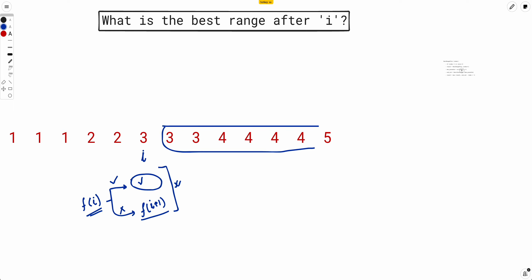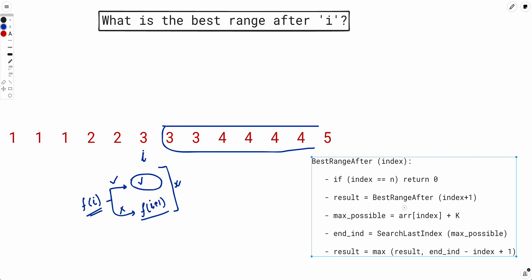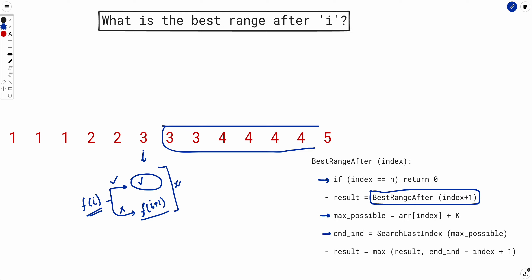The pseudo-code looks like this: base case — if index equals n, return 0 since no prizes can be captured. Otherwise we have two choices: skip i, giving best_range_after(i+1), or don't skip i — compute the maximum value capturable (start + k), do a binary search for the last index with that value, and compute the number of prizes in this segment. Return the maximum of these two cases.